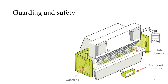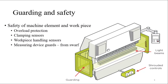The next is guarding and safety, which is very important for a CNC machine because CNC is completely automatic, and an operator can't see what is happening inside. There are two types of safety: safety of the machine element and workpiece, and safety of the operator. For machine safety, the first is overload protection — whenever the machine moves beyond its capacity, the overload protector will automatically shut down the machine. The second is the clamping sensor — if your workpiece or tool is loosened up, it will not start the machine. Then there is the work handling sensor, which checks that material is still inside the machine.